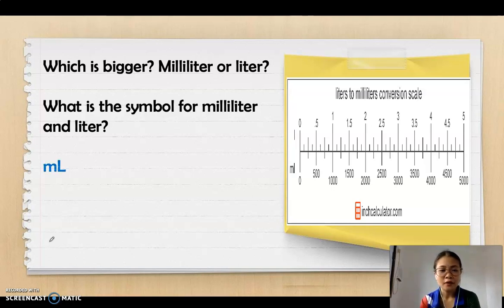For the milliliter, it's small letter M and then big letter L. And for the liters, you just have to write L. Now, 1,000 ml equals 1 liter, and 1,000 liter equals 1 cubic meter.